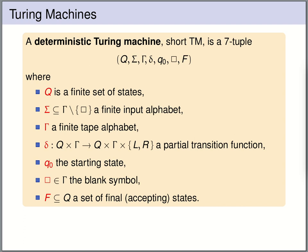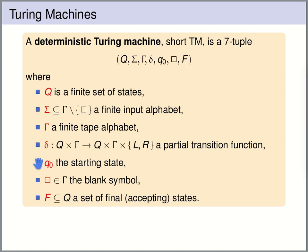A deterministic Turing machine, abbreviated as TM, is a 7-tuple with the following ingredients: a finite set of states, a finite input alphabet, a finite tape alphabet gamma (of which the input alphabet is a subset and which contains the blank symbol), a transition function, a starting state, a distinguished blank symbol, and a set of final accepting states.